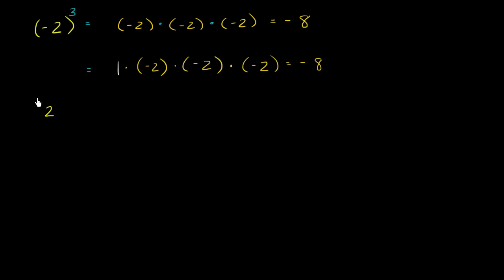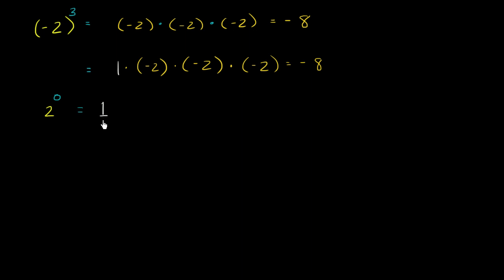This is a more useful idea for understanding exponents, especially when you take things to the 1 or 0 power. What is positive 2 to the 0 power? Well, this says how many times are you going to multiply 1 by this number? You take a 1 and multiply it by 2 zero times, so you're just left with the 1. So 2 to the 0 power is equal to 1.